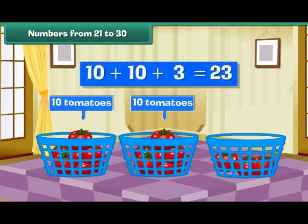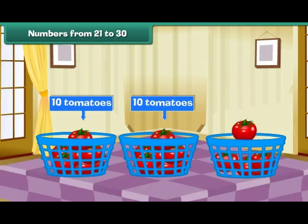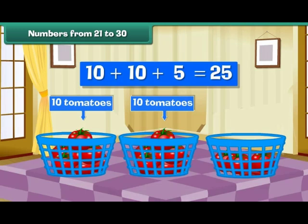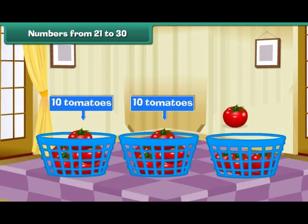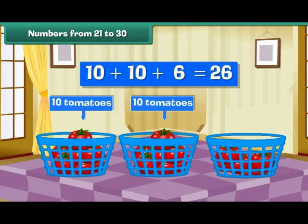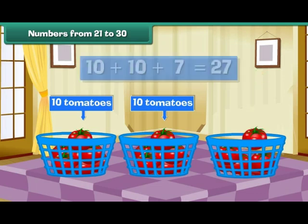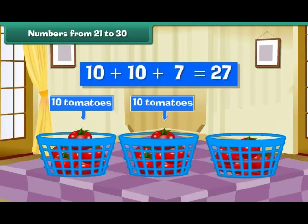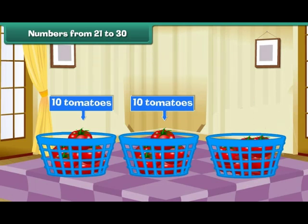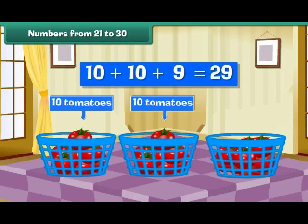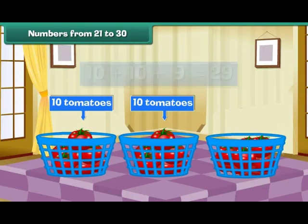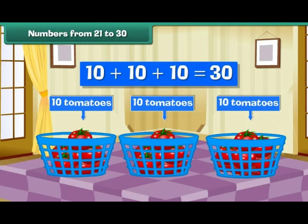Similarly, two tens and three make 23. Two tens and four make 24. Two tens and five make 25. Two tens and six make 26. Two tens and seven make 27. Two tens and eight make 28. Two tens and nine make 29. Two tens and ten make three tens — that is 30.